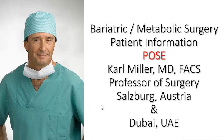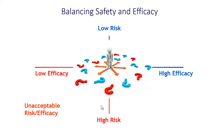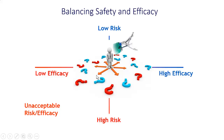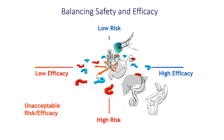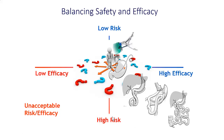Welcome to the bariatric and metabolic surgery patient information. Today we will talk about the POST procedure. When thinking about surgical help for obesity and metabolic disorders, we have to know that there are procedures with an extremely low risk and procedures with a higher risk — procedures that are low efficiency and high efficiency. We should find your specific expectation and desired high or low risk ratio profile. The more invasive the procedures are, the more efficient they are, but on the other hand, higher in risk regarding complications and side effects.